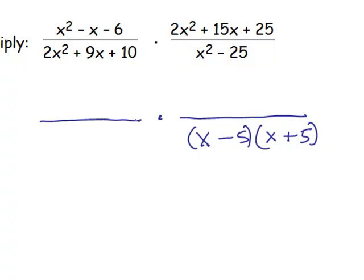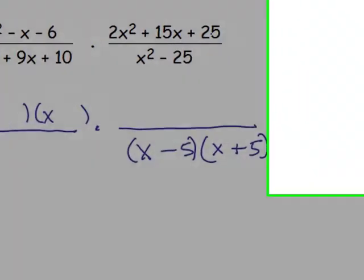Probably the next simplest one is the first numerator, x squared minus x minus 6, because it's a single x. And if it factors at all, it will be x in one binomial and x in the other. The other two, the first denominator and the second numerator, are going to require more factoring. So, we're going to do a lot of this factoring off to the side. You might want to think of it as being done on scratch paper.